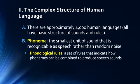Human language is pretty complicated. There are approximately 4,000 human languages, and all have basic structures of sounds and rules. Not all languages have the same sounds or types of sounds, which is why learning a new language can be difficult — we have to learn how to create new sounds that we're not used to creating. The smallest unit of sound that is recognizable as speech is what we call a phoneme, an identifiable unit of speech recognized as that, rather than random noise.